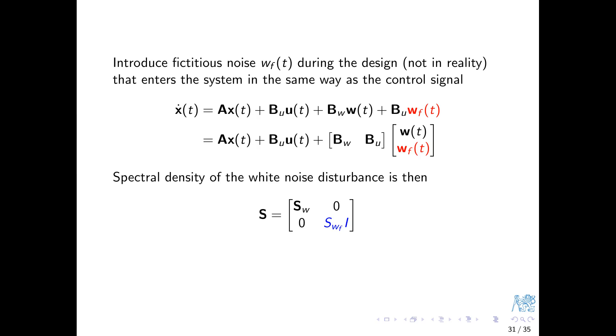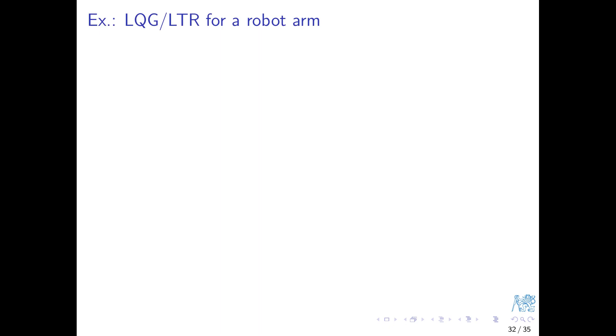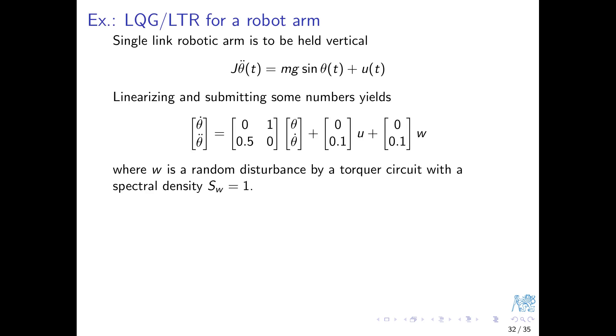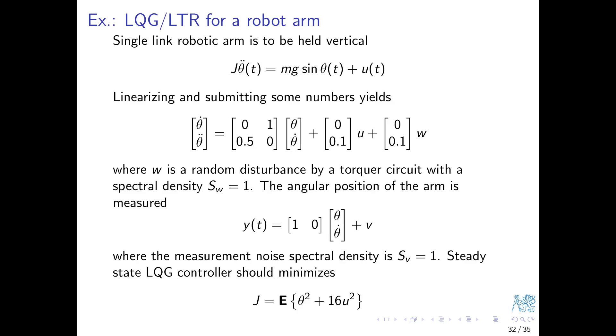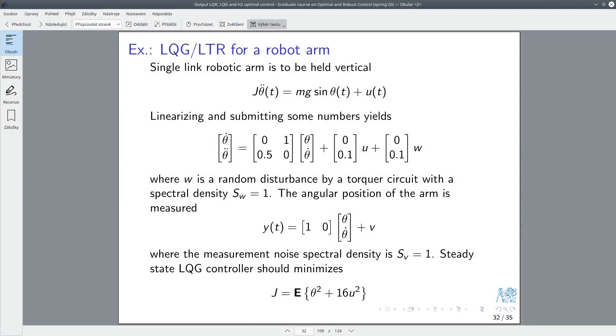You will find some quite elaborate theoretical treatments in the literature, but the core idea is essentially this simple and intuitive. Let's have a look at an example, a model of a single link robotic arm. The linearized state equation is this, where W is a disturbing torque with a given spectral density SW. The output equation shows that only the angle of the arm is measured, and the measurement is corrupted by the noise V of a given spectral density SV. The cost to be minimized is the standard combined mean square value of the angular regulation error and the control. Let me now comment on the design and the results in MATLAB again.